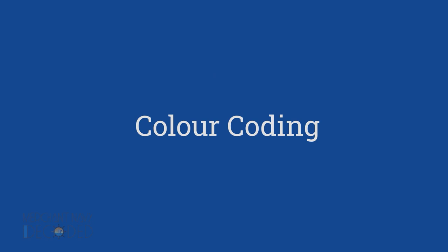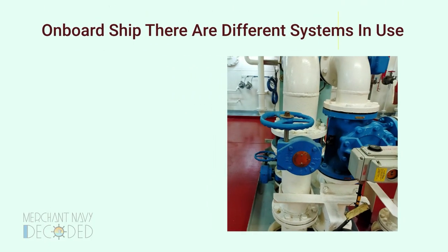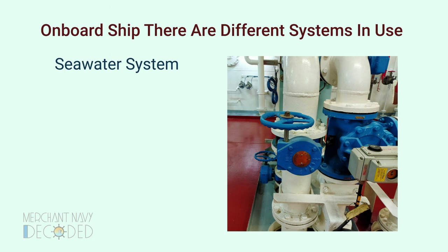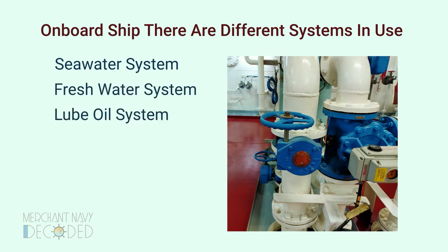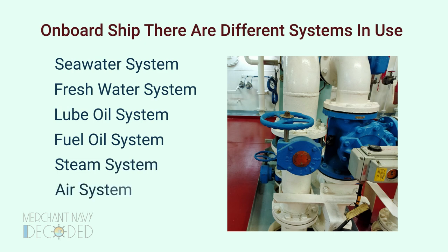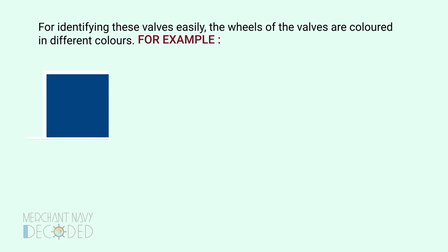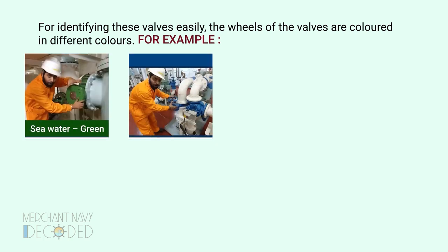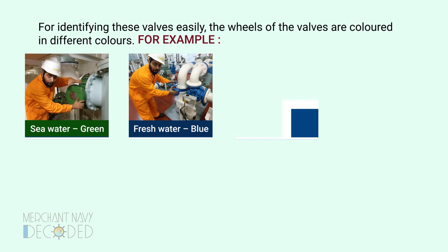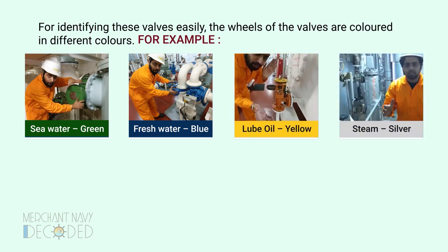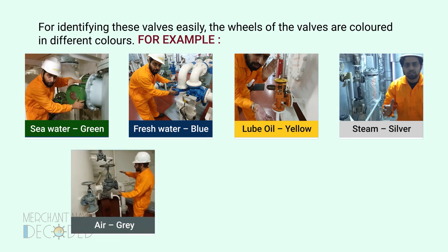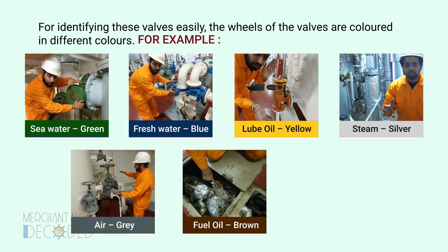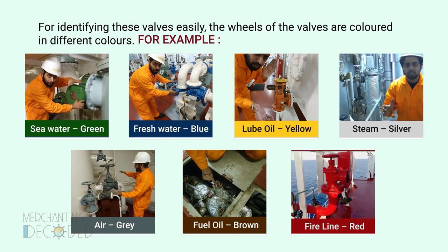Color coding. On board ship, there are different systems in use, like seawater system, fresh water system, lube oil system, fuel oil system, steam system, air system, and fire line. For identifying these valves easily, the wheels of the valves are colored in different colors. Seawater valves are colored green, fresh water valves are colored blue, lube oil valves are colored yellow, steam valves are colored silver, airline valves are colored grey, fuel oil line valves are colored brown, and fire line valves are colored red.